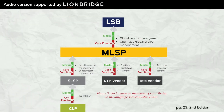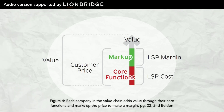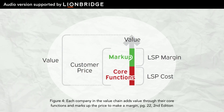This added value is at the heart of the language services industry. It is why LSBs are happy to pay higher prices to work with MMLSPs instead of working directly with translators. Figure 4: Each company in the value chain adds value through their core function and marks up price to make a margin. Figure 4 shows the relationship between the value, the customer price, the core functions, and the markup, including the LSP margin and the LSP cost.